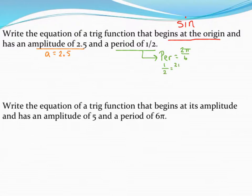So I'm going to replace the period with one-half. That's what they've told me the period was. And I'm going to find the b value. So cross-multiplying, I find out that b has to be equal to 4 pi in this case.